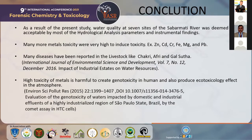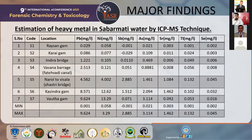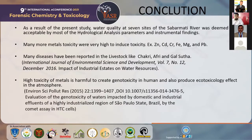In conclusion, as a result of the present study, water quality at the 7 sites of the Sabarmati river was not acceptable by most toxicological analysis parameters and instrumental findings. Many metal toxicities are very high and can induce toxicity — such as zinc (Zn), magnesium (Mg), copper (Cu), and others. Many diseases have already been reported in livestock in villages like Chharodi, Odhav, and Kalasudra as a result of heavy metal polluted water.